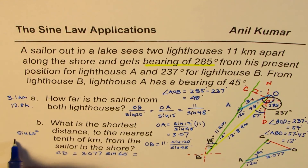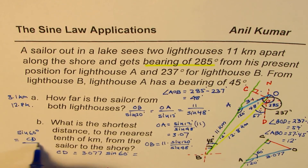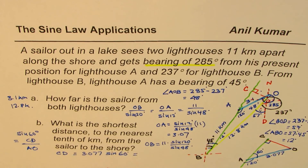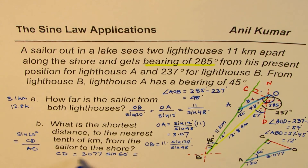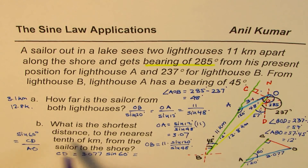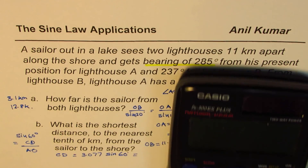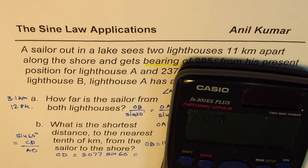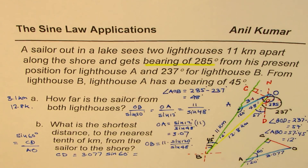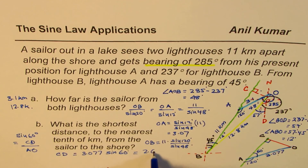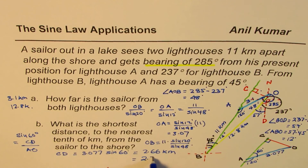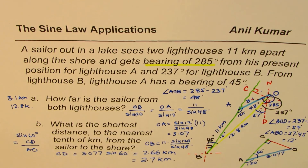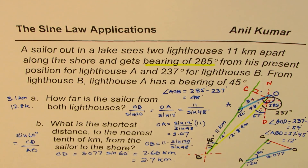Sine of 60 degrees equals the opposite side CD divided by the hypotenuse AO. When you cross-multiply, CD equals AO times sine 60, which is 3.077 times sine 60 degrees. Computing that: 3.077 times sine 60 equals 2.66 kilometers. Rounded to one decimal place, that is 2.7 kilometers — the shortest distance from the sailor to the shore.